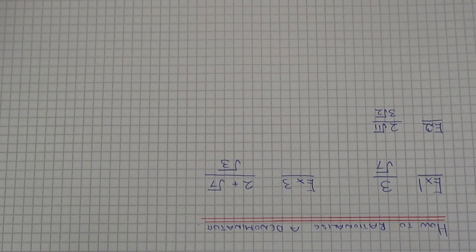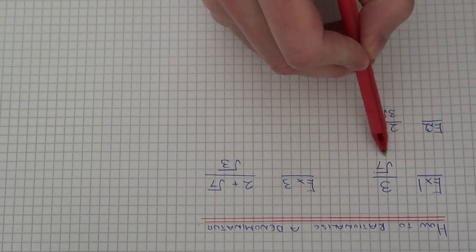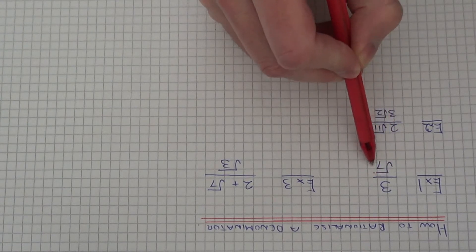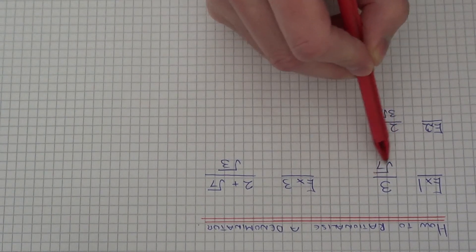If you're asked to rationalise a denominator of a fraction, what you have to do is get rid of the surd at the bottom of the fraction. So we need to get rid of this root here.